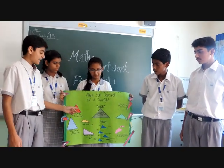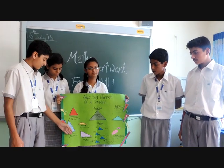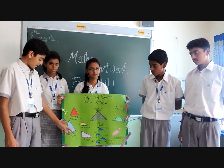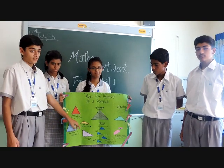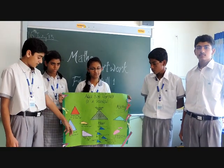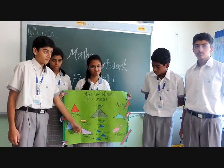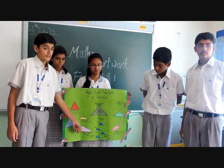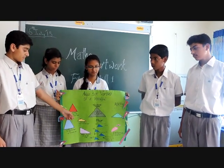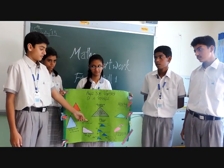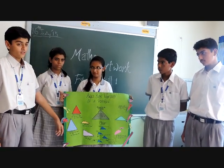In the equilateral triangle, all sides and all angles are equal. In the isosceles triangle, two angles are equal. In the right angle triangle, one of the angles is always 90 degrees. In the scalene triangle, all angles and sides can vary.